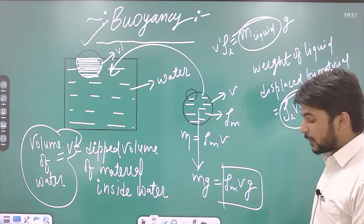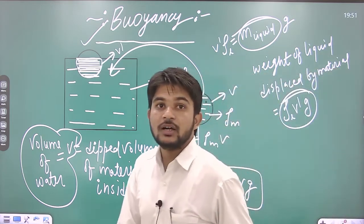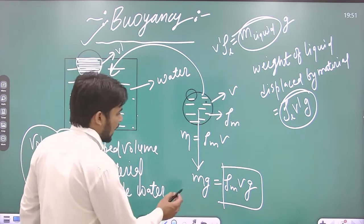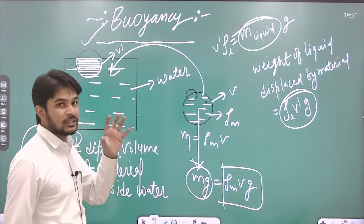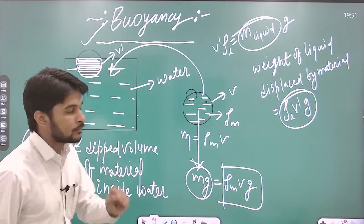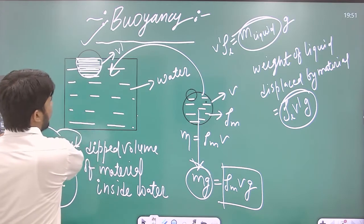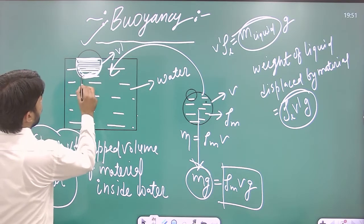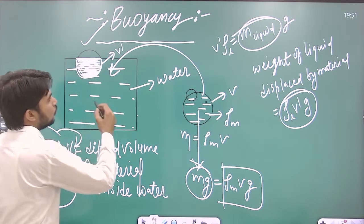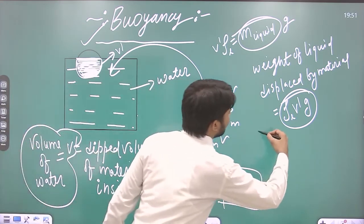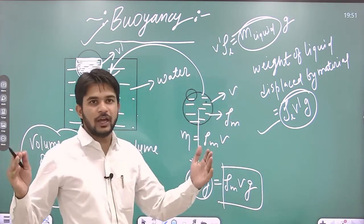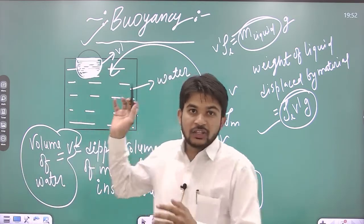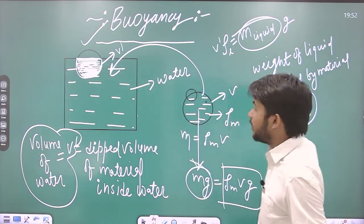This is the weight of the liquid displaced by the spherical ball: ρL × V dash × g. Mg is the weight of the entire ball. Now, when this volume of the ball has displaced the water, consider what happens next.